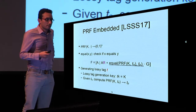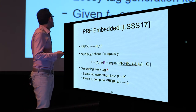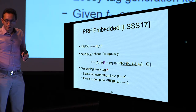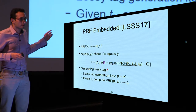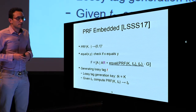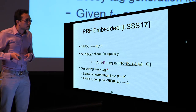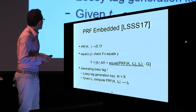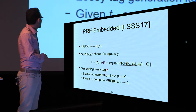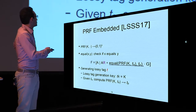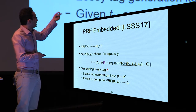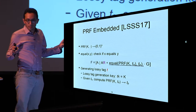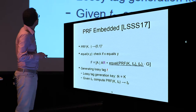For the lossy mode, to generate a lossy tag, we use a lossy tag generation key — the tag key — as the PRF key. Given the auxiliary part of the tag TA, we compute the primary part TP by evaluating the PRF at TA. If PRF(TA) equals TP, the equality is satisfied, giving H equal to zero. So the lossy mode is equivalent to having H equal to zero.